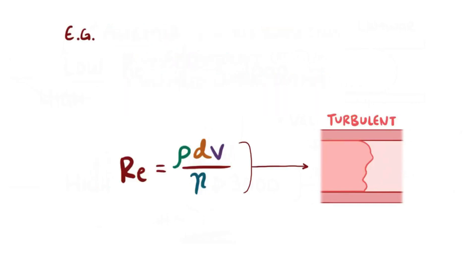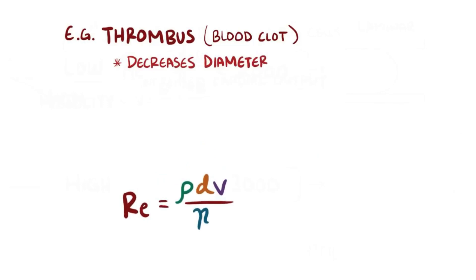Now another example would be a person with a thrombus, or a blood clot, which just like atherosclerotic plaque would narrow or decrease the diameter of a blood vessel. Now at first glance, this seems a little weird, since it looks like a decrease in diameter should probably decrease Reynolds number.